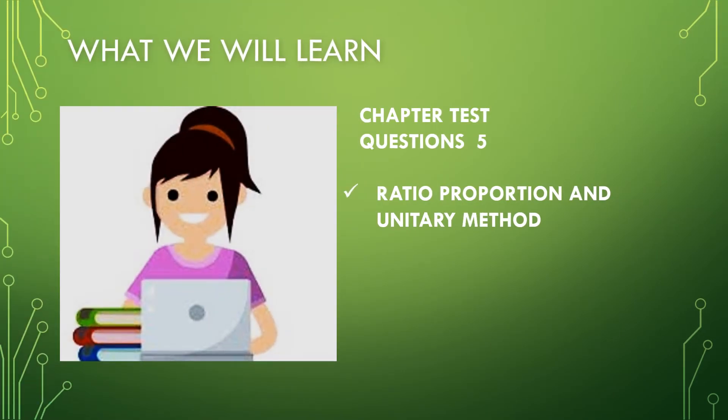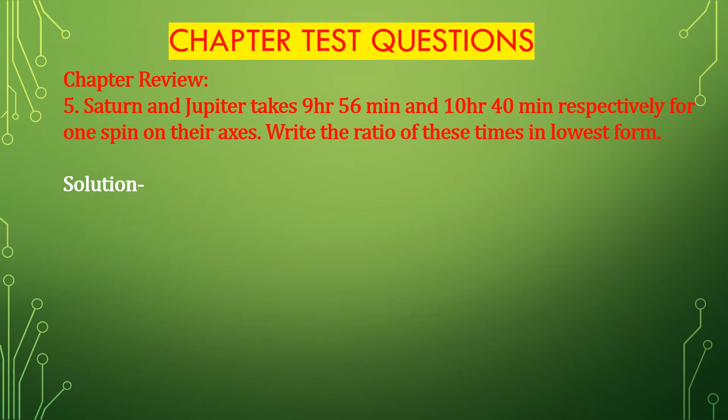Today we will learn and solve chapter test questions 1 to 10 and the topic is ratio, proportion and unitary method. Let's solve some questions. Question number 5: Saturn and Jupiter take 9 hours 56 minutes and 10 hours 40 minutes respectively for one spin on their axes. Write the ratio of these times in lowest form.